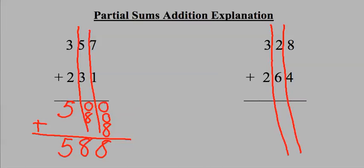I start by moving from left to right. In my hundreds column, I have 3 plus 2. 3 plus 2 is 5, but it's not just 5, it's 500.